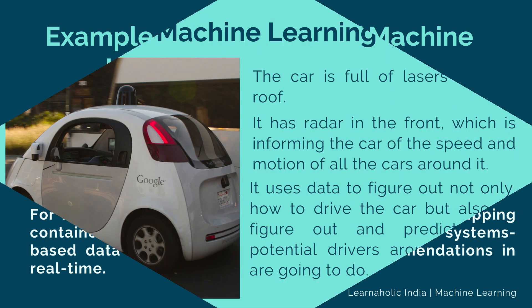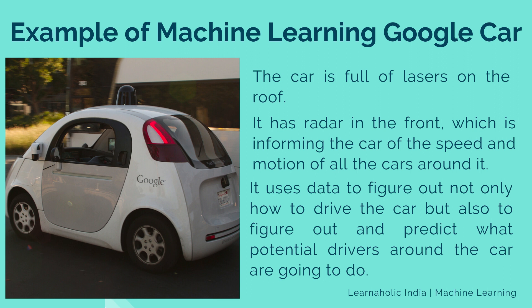Now let's see another example of machine learning: the Google car. Everybody knows the Google car. The car is full of lasers on the roof which tell it where it is regarding the surrounding area. It has radar in the front which informs the car of the speed and motion of all the cars around it. It uses all of this data to figure out not only how to drive the car, but also to predict what potential drivers around the car are going to do. What's impressive is that the car is processing almost a gigabyte per second of data.